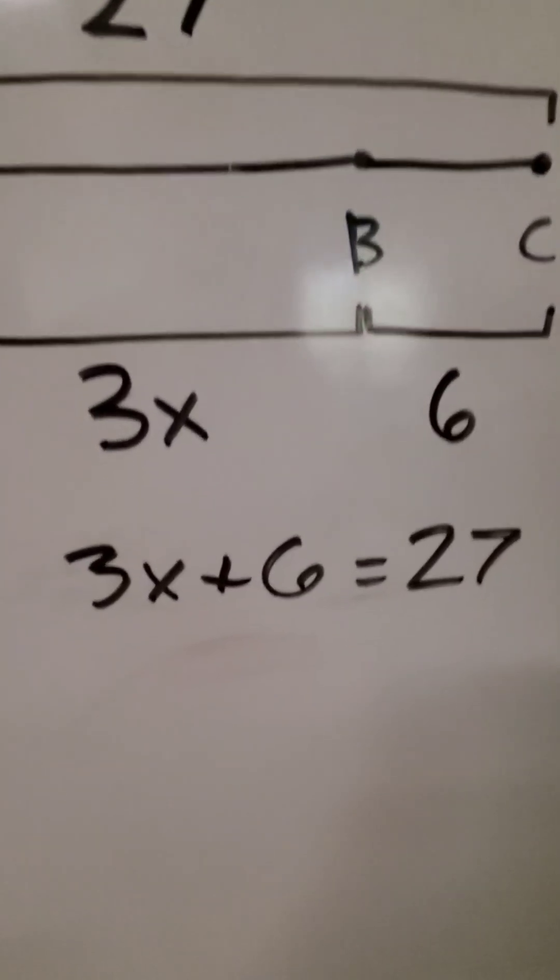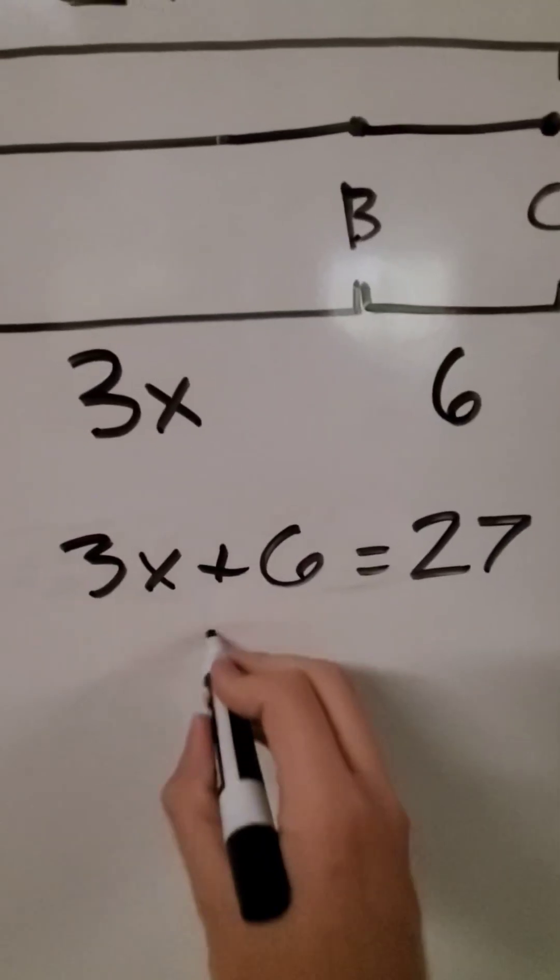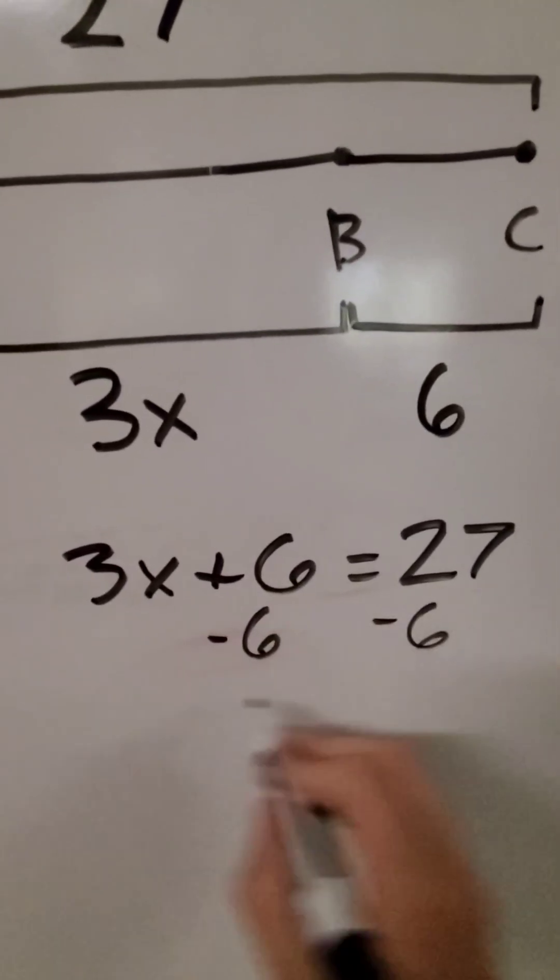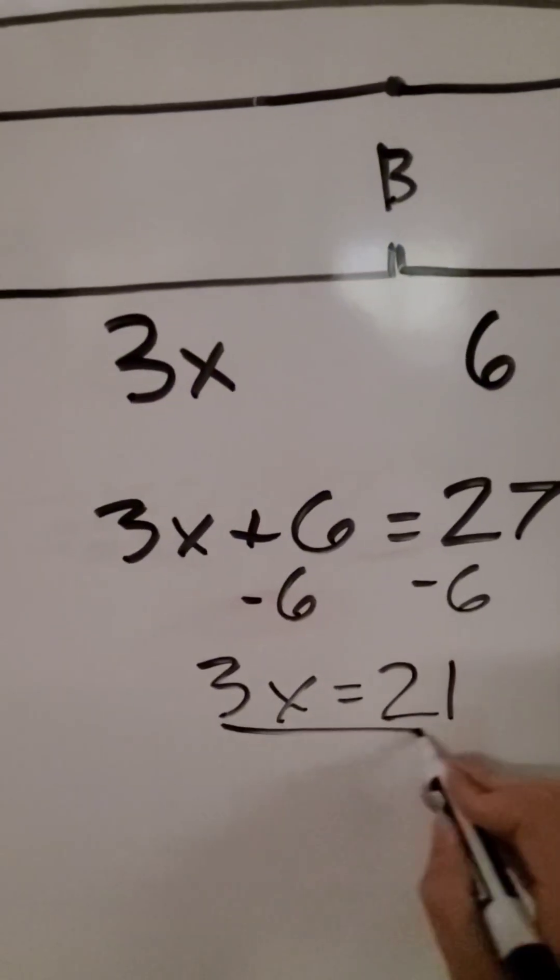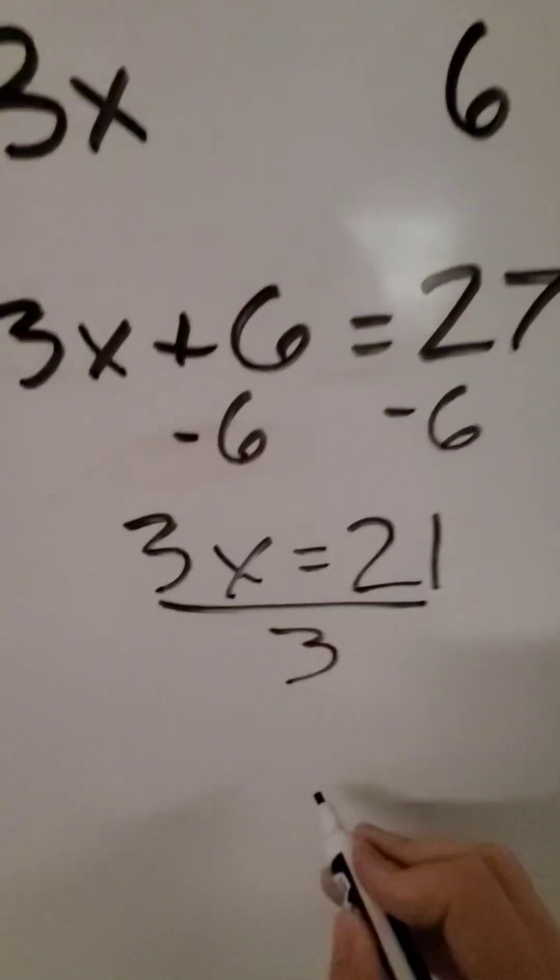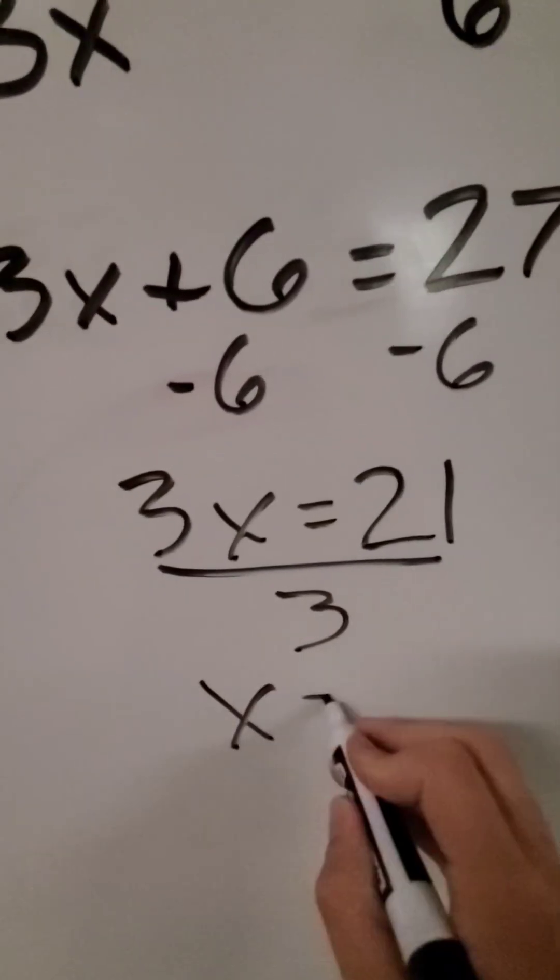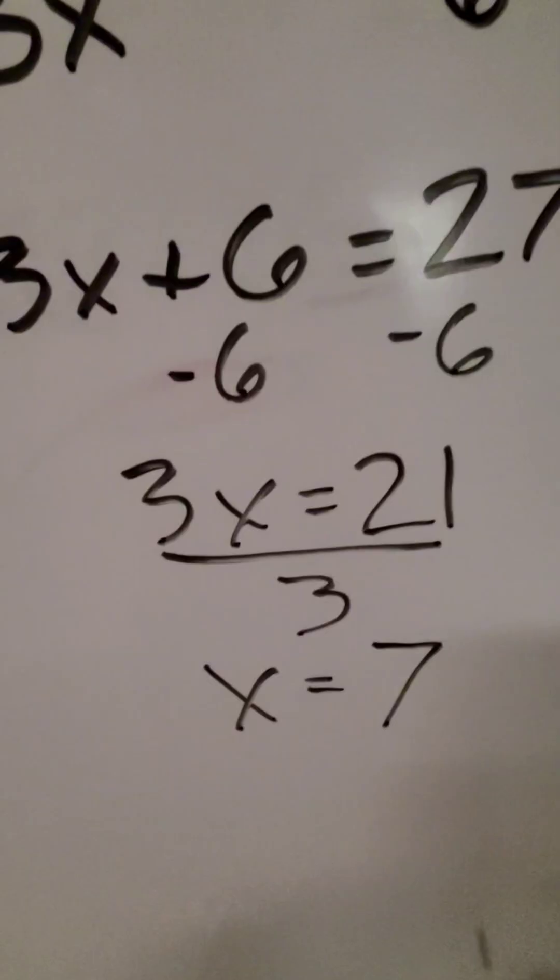Now we'll need to use some algebra to solve this. We're going to subtract 6 from both sides and we get 3x equals 21, and then we divide both sides by 3 and we get that x is equal to 7.